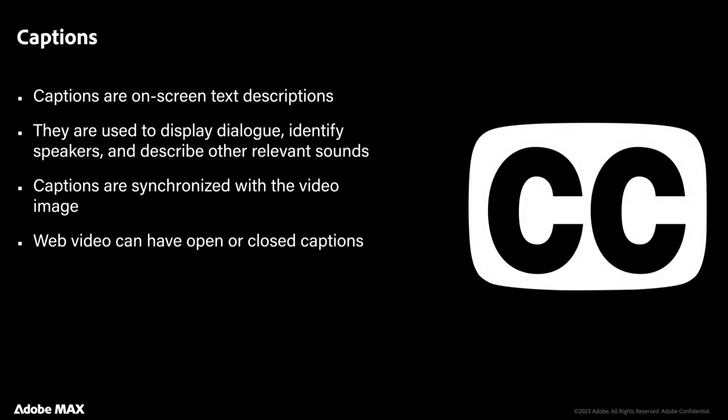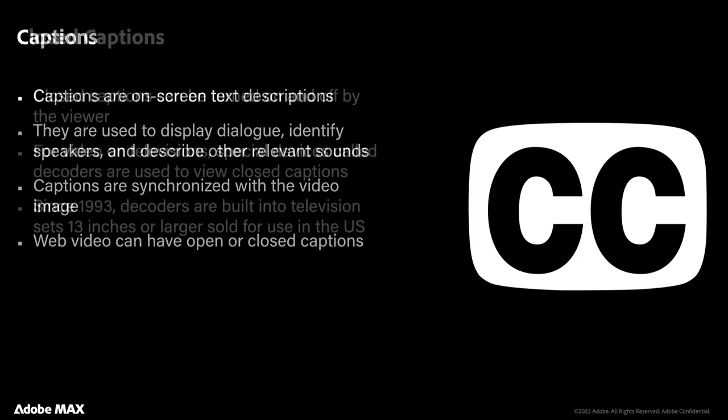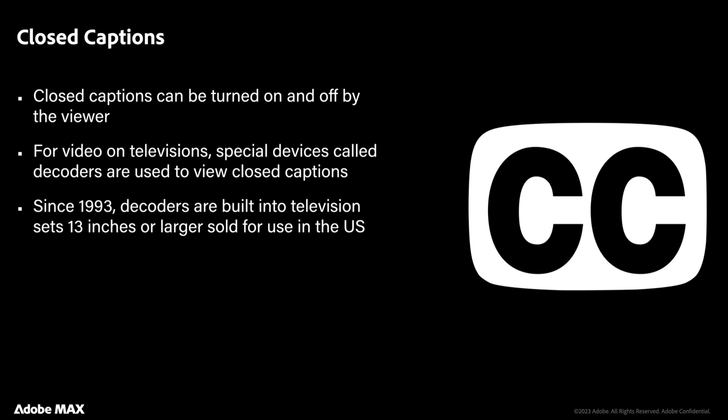Remember, captions are on-screen text descriptions. They can be used to display dialogue, identify speakers, or describe the sound being heard. Captions tend to be synchronized with the video file, but when we deliver to the web they can be either open or closed. The traditional closed captions can be turned on or off by the viewer, usually with a button or with a remote. On televisions there tends to be a decoder device built into most TV sets. Since 1993 this has really been a standard in the U.S., and has grown to become a global standard.